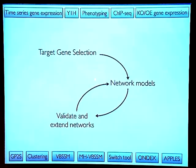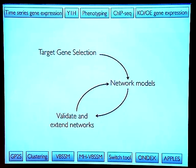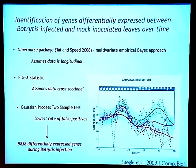A crucial point is that this is not one network model — we can't take all 30,000 genes and build one network. The data means we can model about 80 to 100 genes at a time, so a crucial part of our work has been developing methods to select genes to model together. First, we identify genes differentially expressed in response to infection. Our data fell between the two usual types: traditional methods like F-test assume cross-sectional data with no relationship between consecutive time points, which isn't true for a continuous infection process.